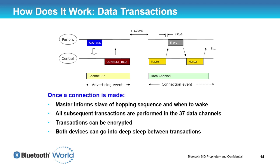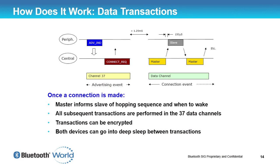Once a connection is made, the master informs the slave of the hopping sequence and when to wake. There's an interval controlling how frequently devices synchronize: for a keyboard it might be every 10 milliseconds, for a heart rate belt every 250 milliseconds, for a proximity tag once a second. All subsequent transactions are performed on data channels, with each wake cycle using a new adaptively frequency-hopped data channel. All transactions can be encrypted with AES encryption and CCM with a MIC appended to each packet to ensure data authenticity.